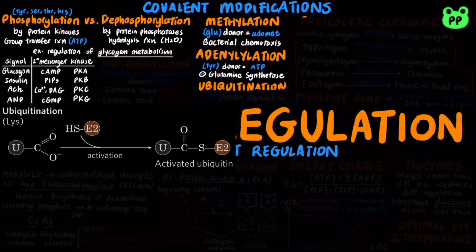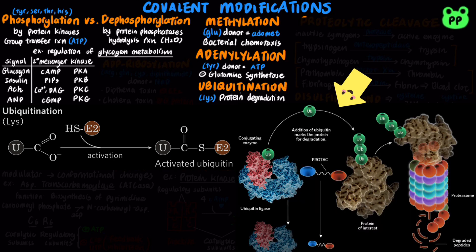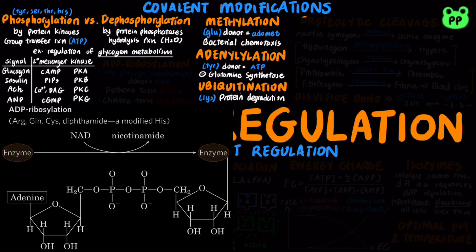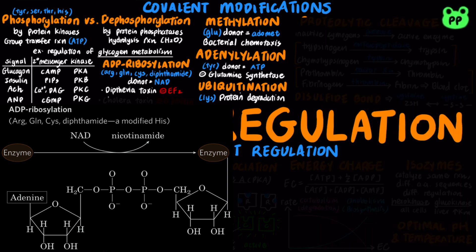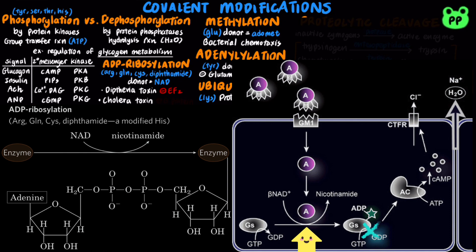Ubiquitination of lysine functions as a tag that predestines proteins for proteolytic degradation by the 26S proteasome. ADP ribosylation of arginine, glutamine, or cysteine with NAD as the ADP ribosyl group donor plays an important role in the inhibitory effects of diphtheria toxin on elongation factor 2 during translation, and the inhibitory effects of cholera toxin on the intrinsic GTPase of G protein in the intestinal lumen.